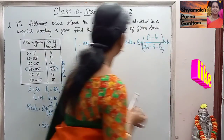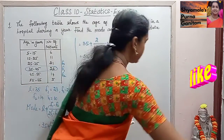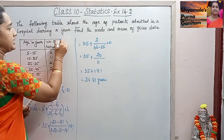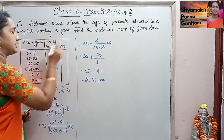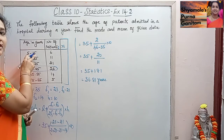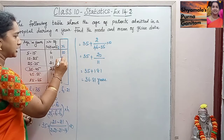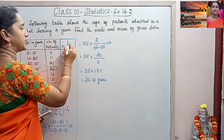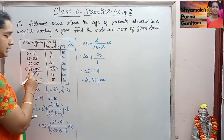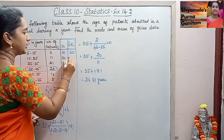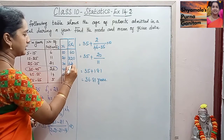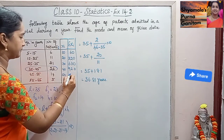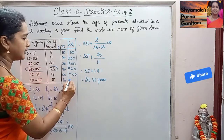Now we will calculate mean. We have frequency Fi and we will calculate Xi, the mid values. The mid values are: 5 plus 15 divided by 2 is 10, then 20, 30, 40, 50, and 60. We will use the direct method, multiplying Fi and Xi: 6 into 10 is 60, then 220, 630, 920, 700, 300.